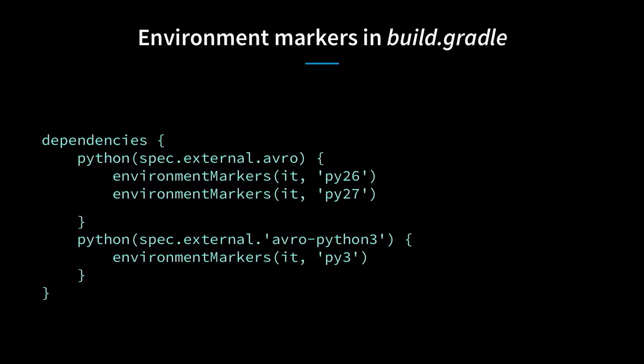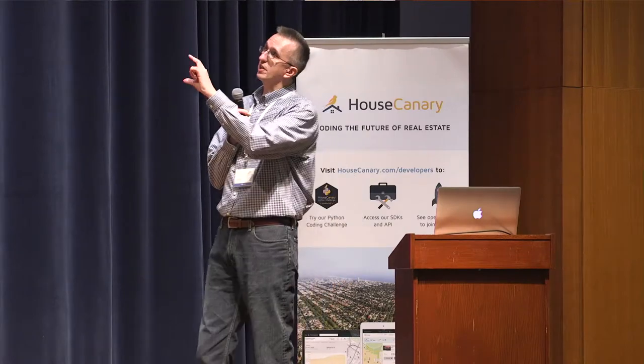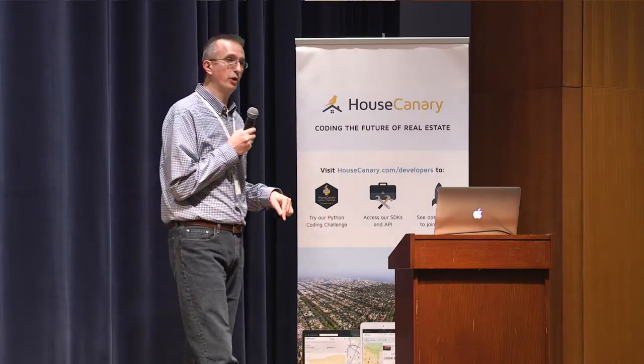This is Gradle configuration for part of our product. You see the dependencies—`python` is a configuration in Gradle terms, meaning my runtime dependencies. Most of the time you don't need parentheses, but in this case you do because you have extra braces indicating environment markers. We made shortcuts so developers don't need to write complex comparisons. One interesting case: Avro is a package on Python 2, and there's a separate package for Python 3 called `avro-python3`, so they have mutually exclusive conditions—one only with Python 3, the other with 2.6 and 2.7.